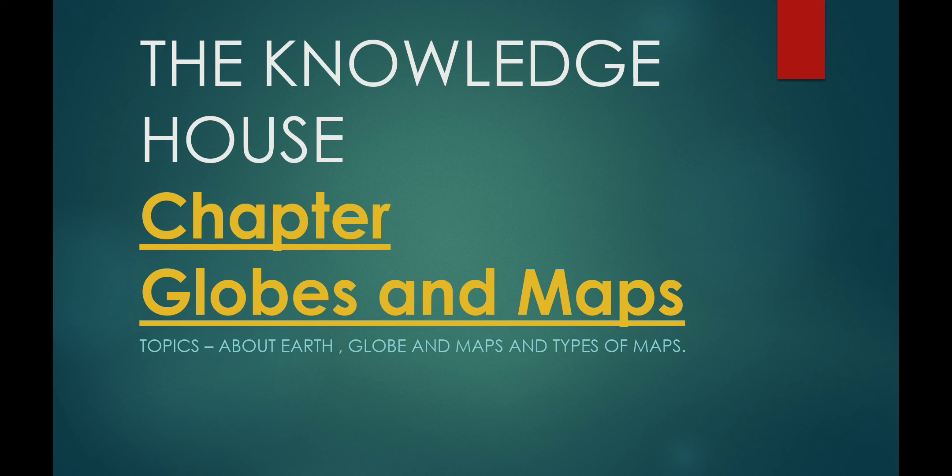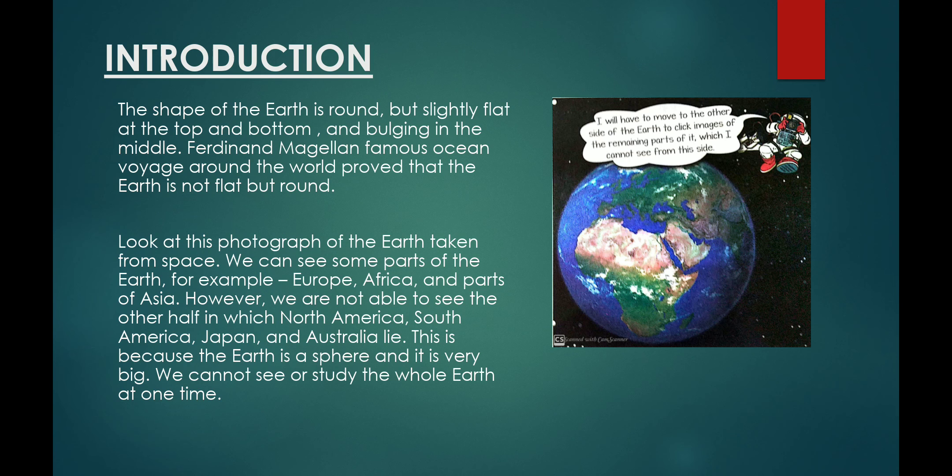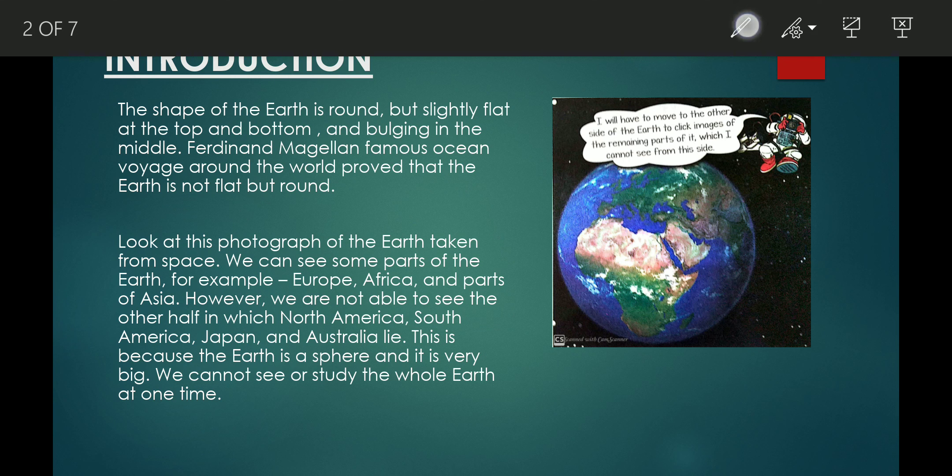Topic is our globe and maps. The shape of the earth is round but slightly flattened at the top and the bottom. Our earth is flat at the top and bottom and bulges in the middle.